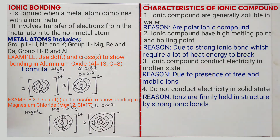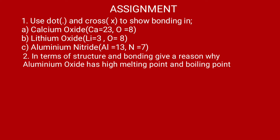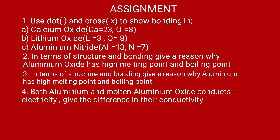The assignment I leave you today: number one, use dots and cross to show bonding in: A — calcium oxide, B — lithium oxide, C — aluminium nitride. Number two: in terms of structure and bonding, give a reason why aluminium oxide has high melting and boiling points. Number three: in terms of structure and bonding, give a reason why aluminium has high melting and boiling points. Number four: both aluminium and molten aluminium oxide conduct electricity — give a difference in their conductivity.